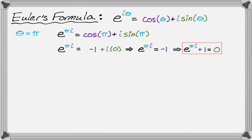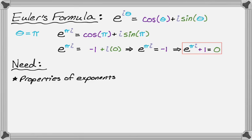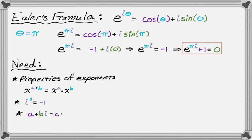To do what we're going to do, we need Euler's formula and a couple of other things. We need one property of exponents: x to the a plus b equals x to the a times x to the b. We need to know that i squared is negative one. And we need to know that two complex numbers a plus bi and c plus di are equal if and only if a equals c and b equals d — meaning the real parts are equal and the imaginary parts (the coefficients of i) are equal.